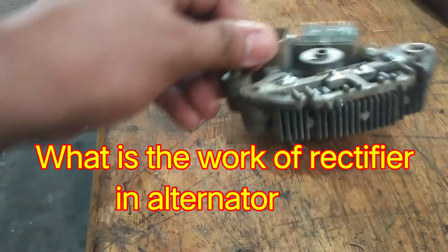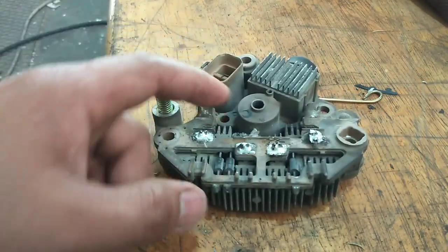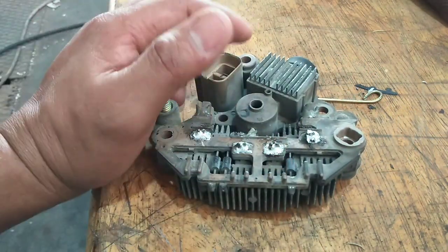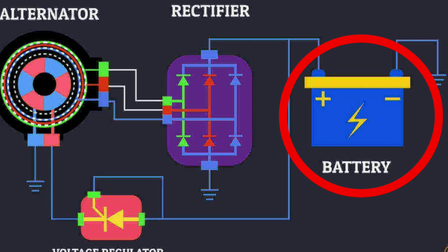What is the rectifier used for? The rectifier regulator is used to convert AC power to DC, allowing the alternator to charge the battery, and controls the amount of power delivered to the battery.